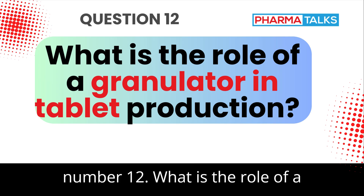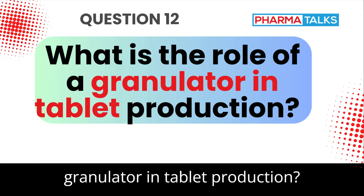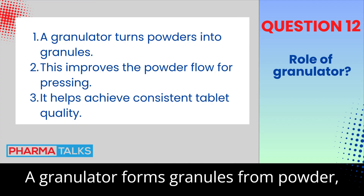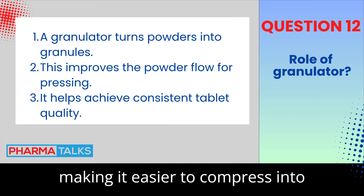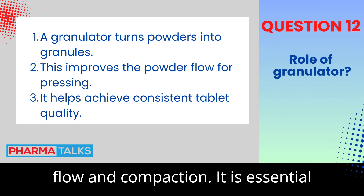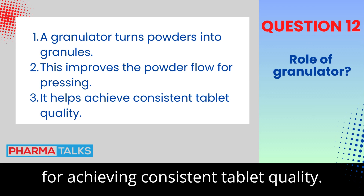Question 12: What is the role of a granulator in tablet production? A granulator forms granules from powder, making it easier to compress into tablets. This step improves the powder's flow and compaction, and is essential for achieving consistent tablet quality.